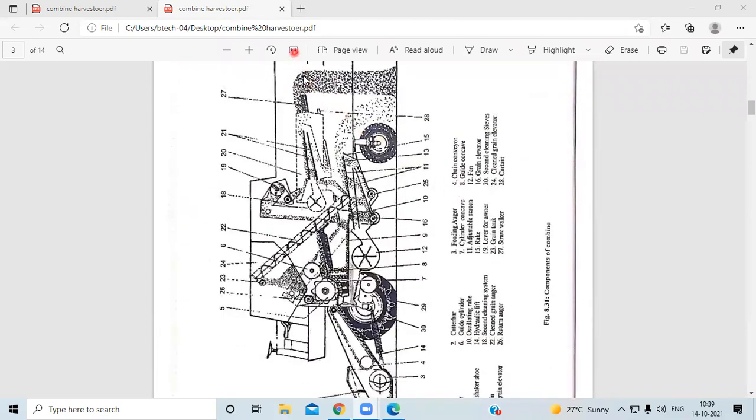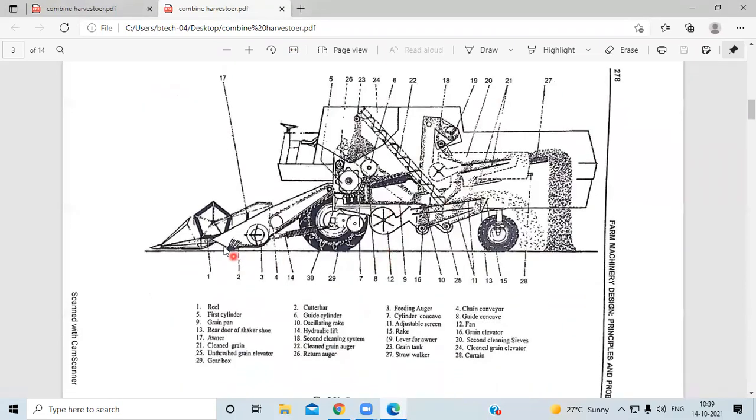This is the schematic diagram of the Combined Harvester. This is the reel, the cutter bar, this portion is called the feeding auger, the chain conveyor, first cylinder, second cylinder. Then these are the oscillating racks, the different elevators, the different blowers, and straw which is transferred, and grain storage in the tanks.